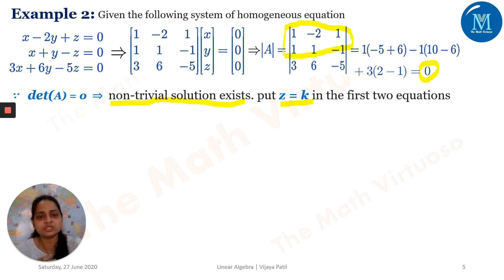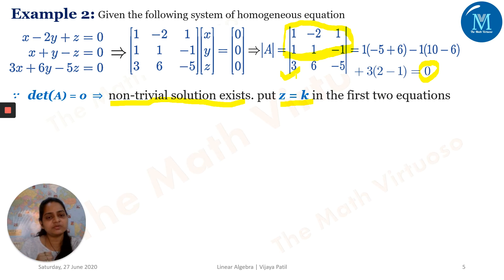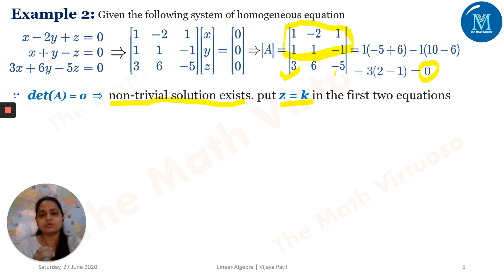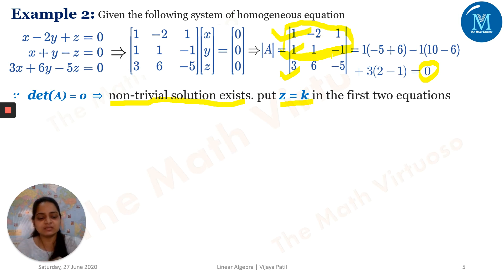If you observe the first two equations, the numbers are small — maximum one and two — whereas in the third equation, the numbers are three, six, and minus five, which are larger. If you don't have a calculator (you only have a virtual calculator in GATE), we should choose the first and second equations because of the smaller numbers, making it easier to get the answer.